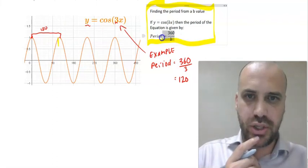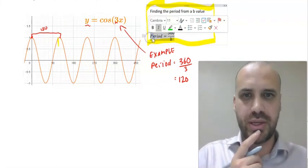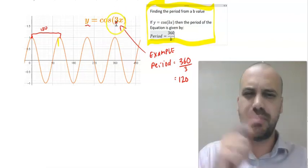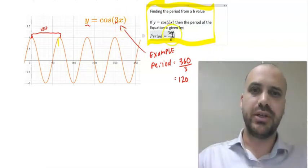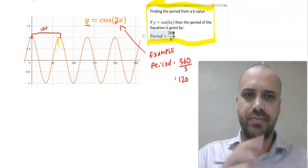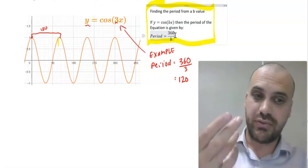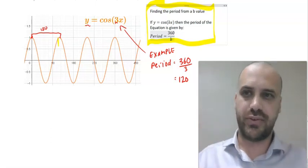That formula is gold. It's really important that you understand that the period is related to the B value, but you can't just look at the B value. You need to do a little bit of math. In the next video, we're going to put amplitude and period together and be able to either sketch functions or find the equation of functions.